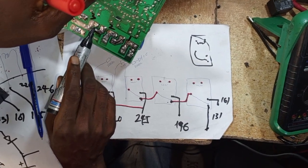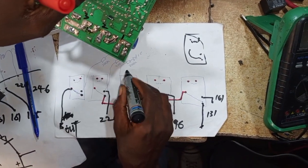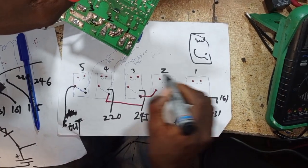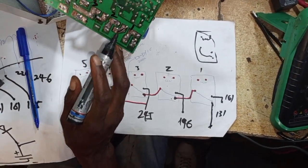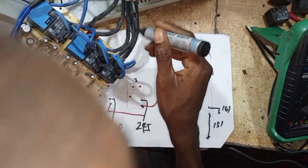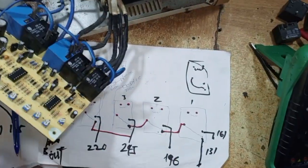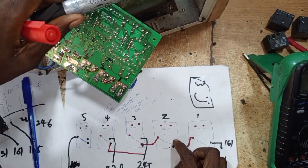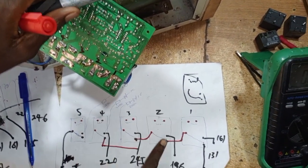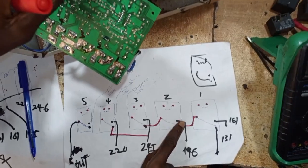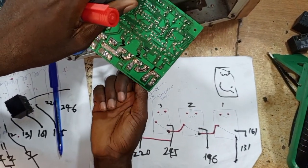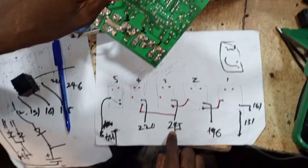Then the next one is 196 - 196 leads to this place, leads to this place of the number two, which is this.